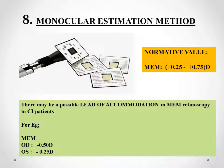The next indirect assessment is the monocular estimation method (MEM) retinoscopy, also called dynamic retinoscopy. This test is usually performed to find lead or lag of accommodation, but it can also help assess convergence anomalies. In convergence insufficiency, we usually get a lead of accommodation with MEM retinoscopy. A lead of accommodation occurs when the reading comes below +0.25 diopter — meaning the patient is using more accommodation than normal. The normal value ranges from +0.25 to +0.75 diopter; above +0.75 is a lag of accommodation.